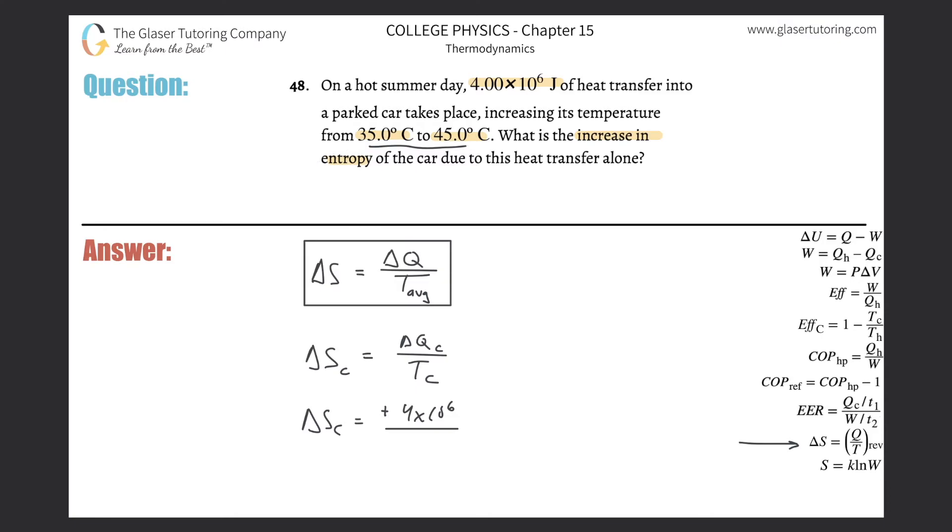All right, and when we take an average, you know that it's basically you add the two values together and then divide it by the number of values you have, assuming it's an equally weighted average, which we should in this case. So just remember that we have to have this both in terms of Kelvin.